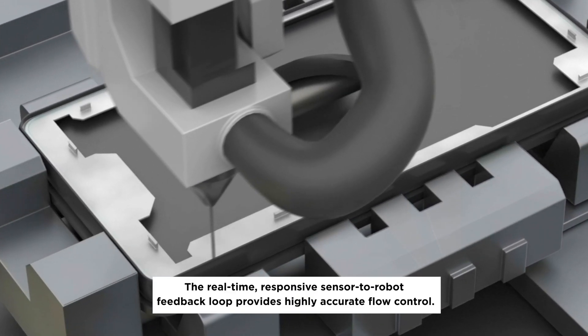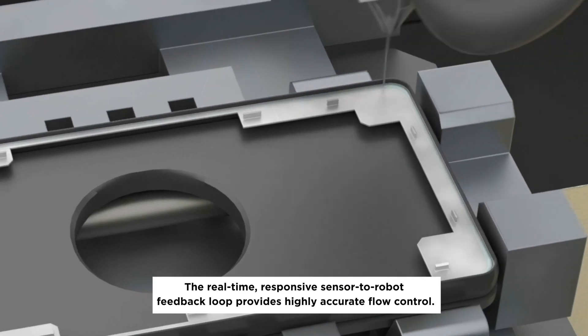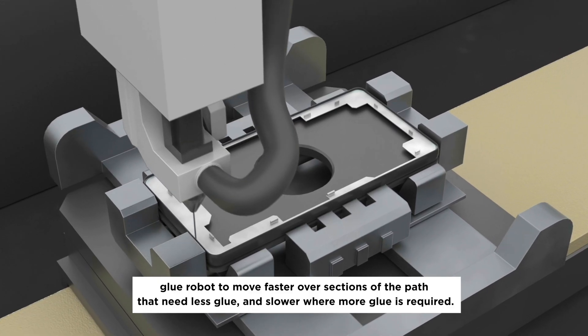The real-time, responsive sensor-to-robot feedback loop provides highly accurate flow control. The calculated glue path factors for depth and width of the channel, instructing the glue robot to move faster over sections of the path that need less glue and slower where more glue is required.